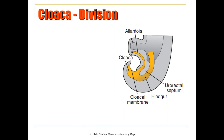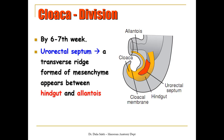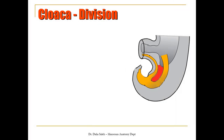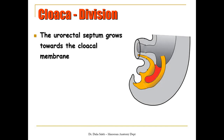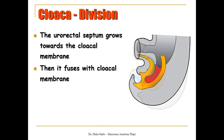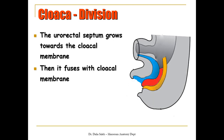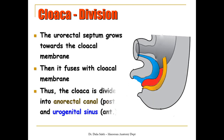Now, how does the cloaca divide? By the sixth or seventh week of development, a septum made of mesoderm called the urorectal septum appears between the hindgut and the allantois. The septum grows towards the cloacal membrane and finally fuses with it, thus dividing the cloaca into an anorectal part posteriorly and the urogenital sinus anteriorly.